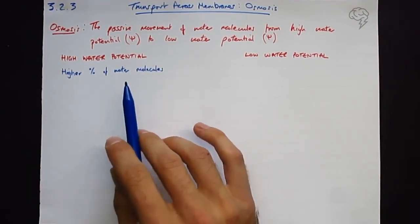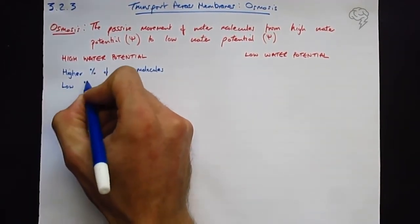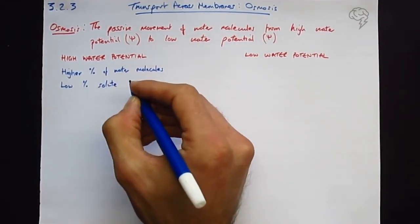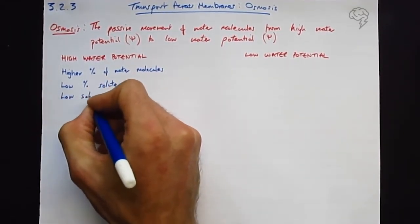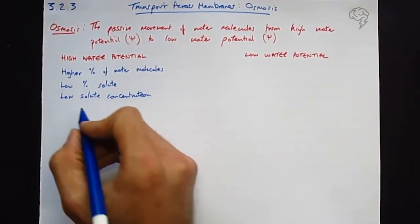A hundred percent water molecules would be the highest possible water potential. It also would have the lowest percentage of solute, or we could say it's the low solute concentration. We could also say therefore that it's hypotonic. Hypo means low, tonic means concentration.